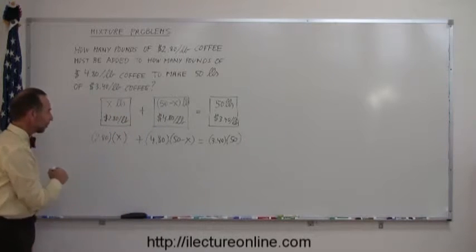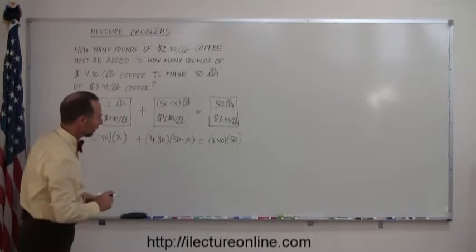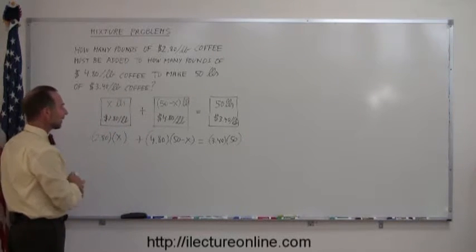Now I simply have to solve for X. Well, I see that I have decimals. I want to get rid of decimals. I'm going to multiply each side by 10.